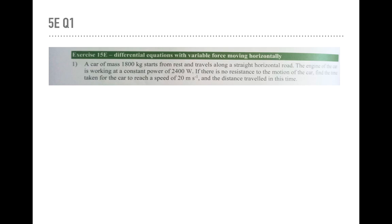If there's no resistance to the motion of the car that means that the total force being applied to the car is 2400 over V. Find the time taken for the car to reach a speed of 20 meters per second. So time and speed means I'm going to let a equal to dv dt and the final part, the distance travelled,